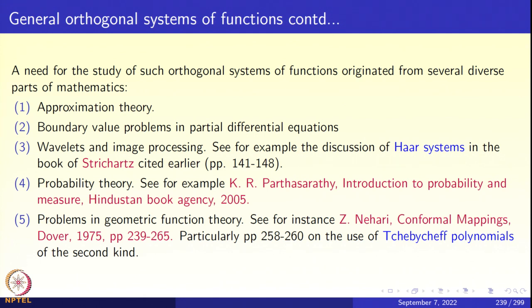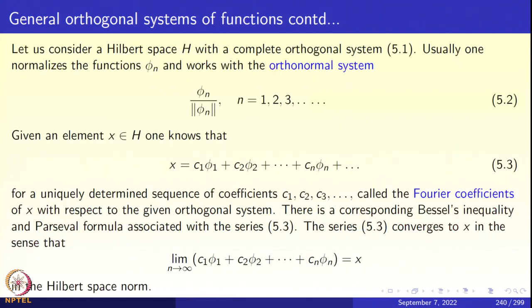I have given several diverse applications of general complete orthogonal systems in Hilbert spaces, and we must develop a Fourier analysis of these. Let H be a Hilbert space with a complete orthonormal system B = {φ₁, φ₂, ..., φₙ, ...} such that φᵢ and φⱼ are orthogonal if i ≠ j and none of the functions are zero. It is customary to normalize these functions.